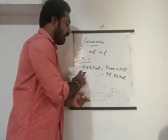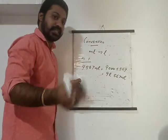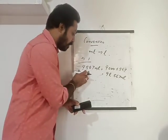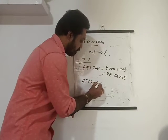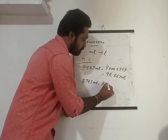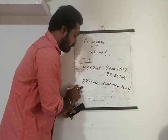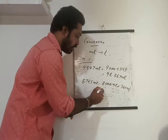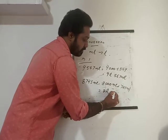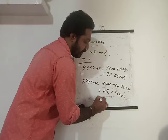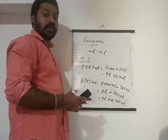Another example for Method 1: eight thousand seven hundred and twenty-five ml. How many thousands? Eight thousand — so that is eight liters. The remainder is seven hundred and twenty-five ml. Answer: eight liters and seven hundred and twenty-five ml.